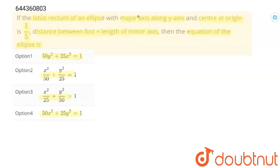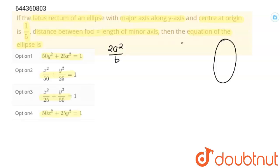The first information is that the major axis is along the y-axis, which means this will be a vertical ellipse. In a vertical ellipse, the length of the latus rectum is 2a² upon b. The equation of the ellipse is x²/a² + y²/b² = 1, where b² is greater than a².